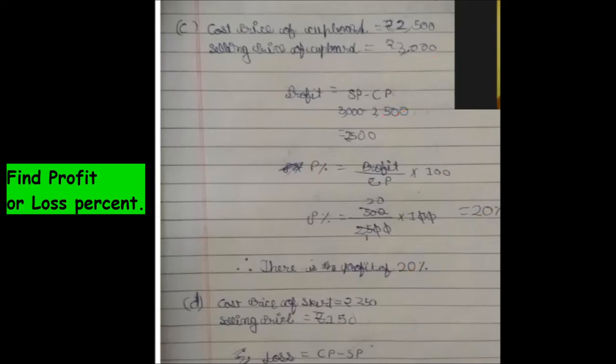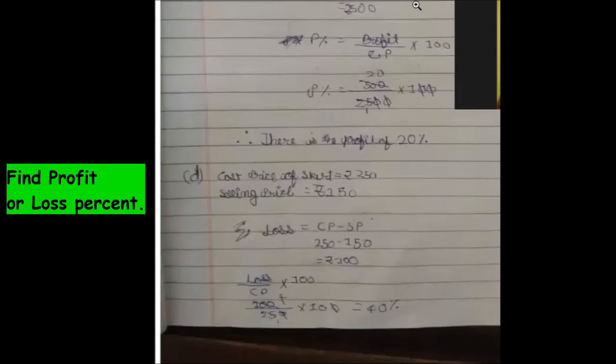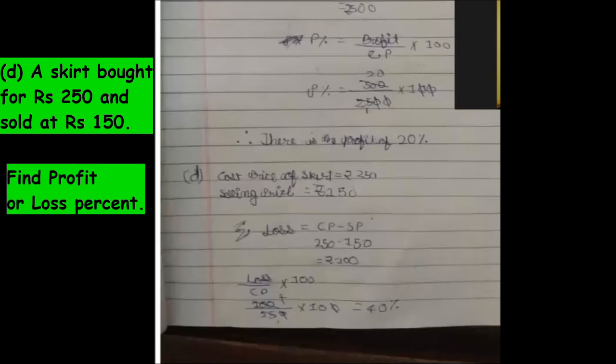Quickly moving on to the question, last part that is D. Can you read the question? A skirt bought for rupees 250 and sold at 150. Very good. So as CP is greater than SP, therefore loss.